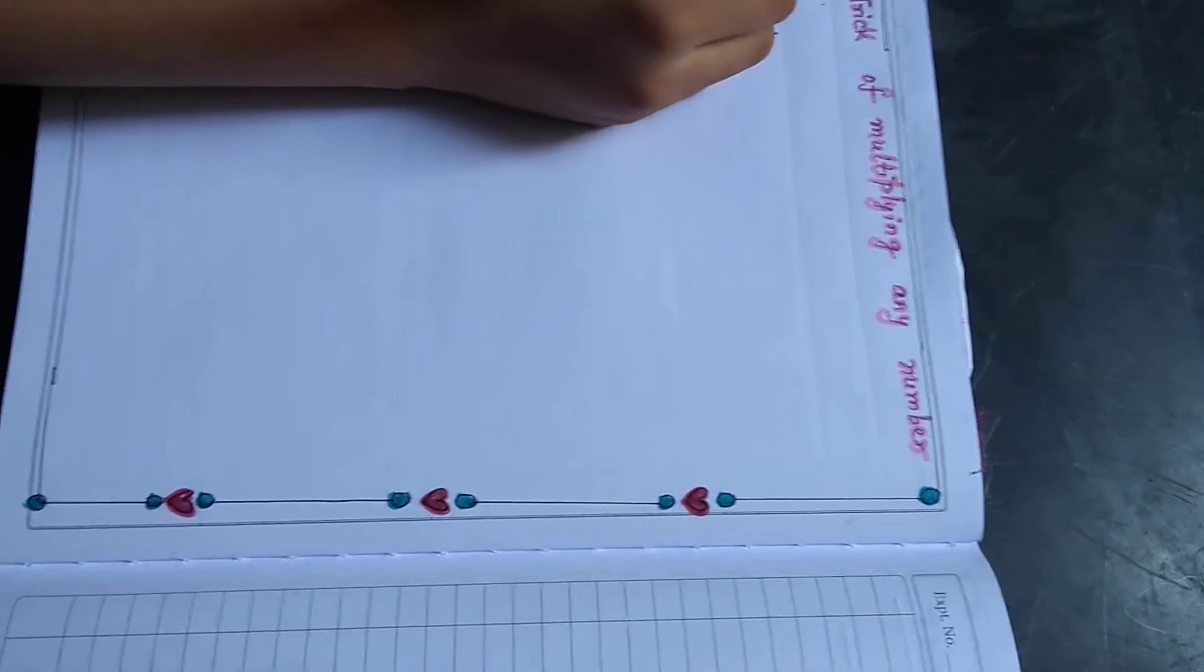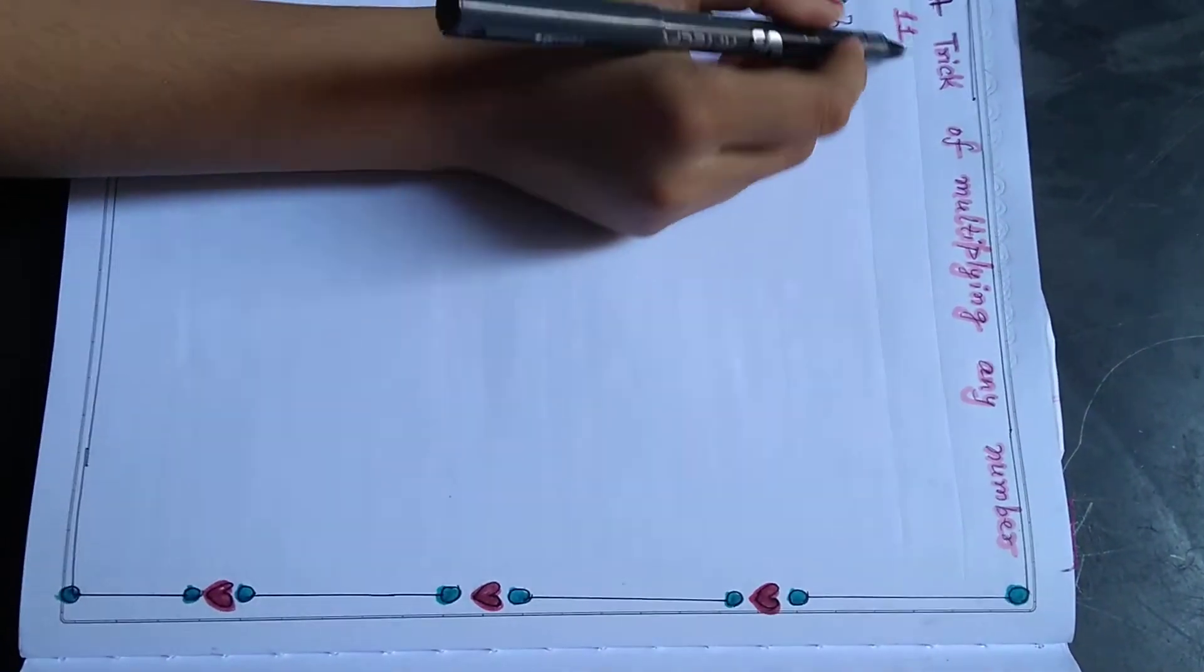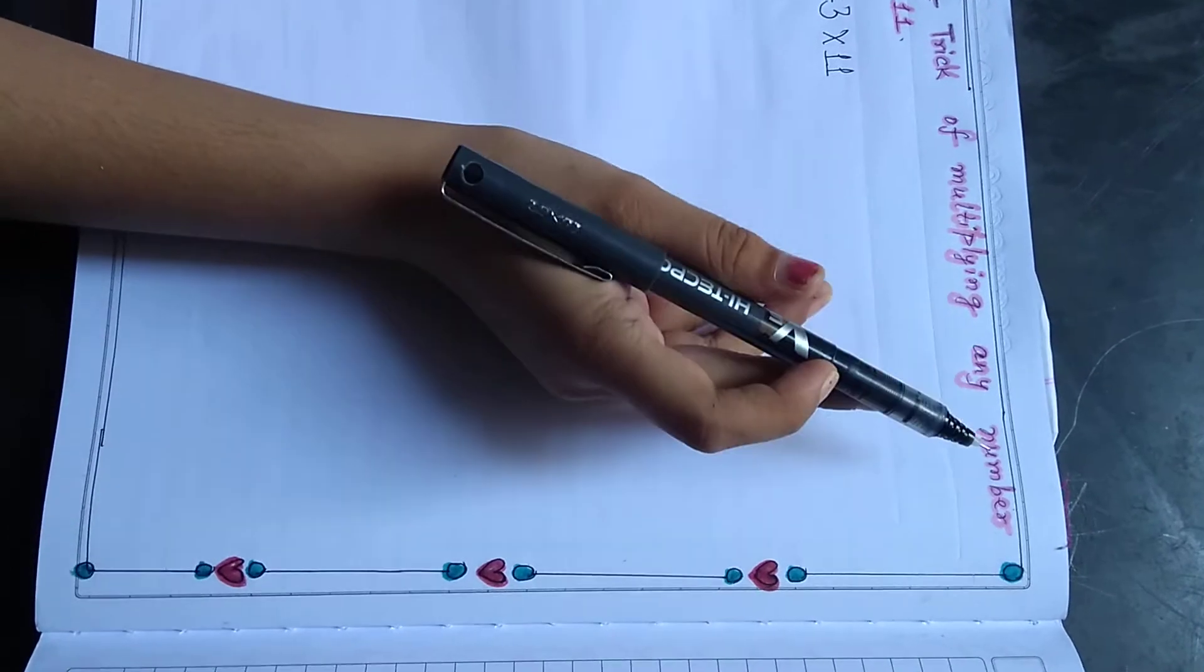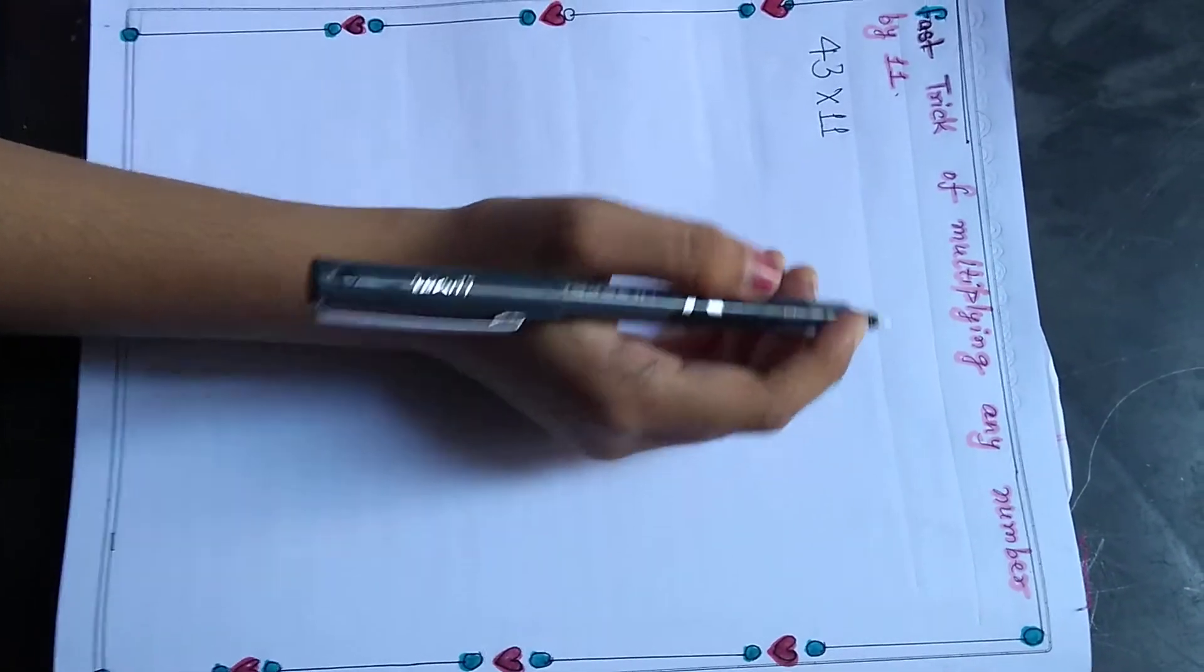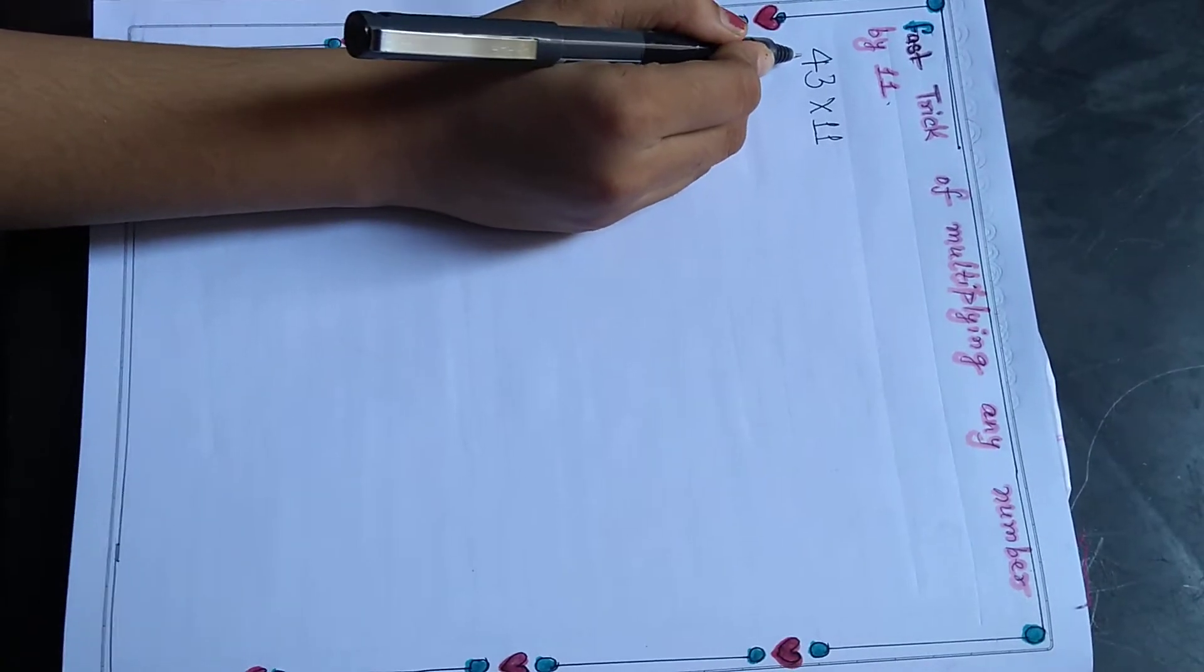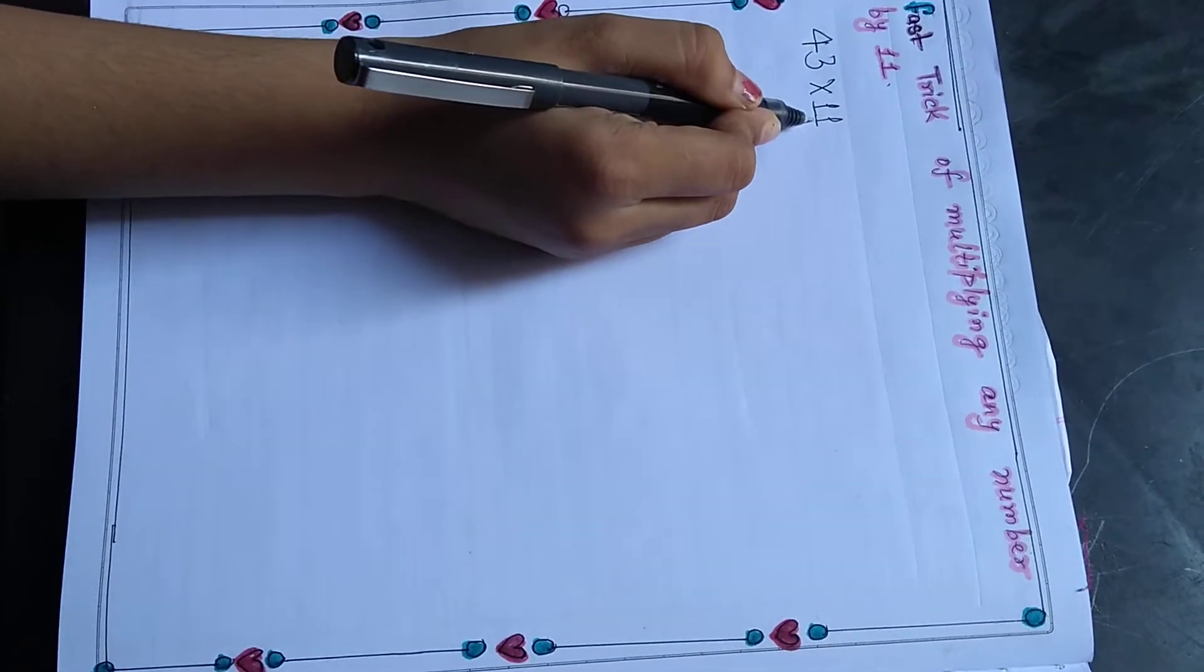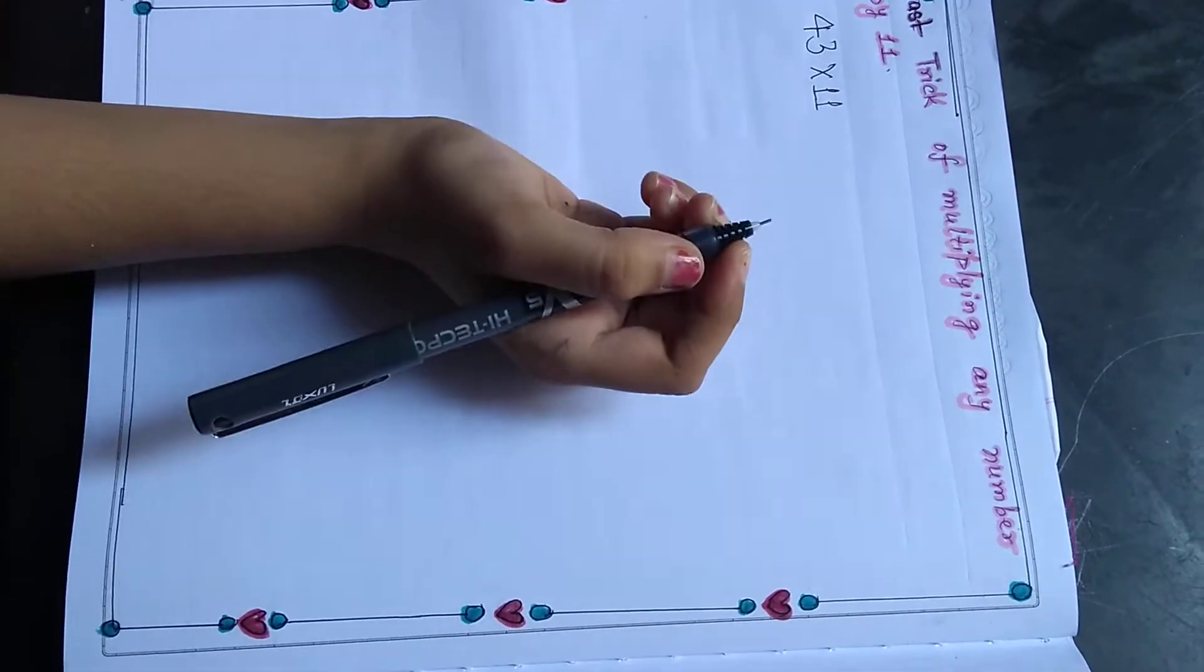Hello everyone, today we are going to study the first trick of multiplying any number by 11. So first we are multiplying 43 by the number 11. Let us see our trick.